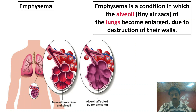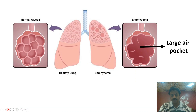Here you can see the normal bronchial alveoli. The alveolar walls are marked and highlighted. This is a normal alveolar with small bubble-like air sacs. Here you can see the normal alveoli, and here you can see the walls destroyed.